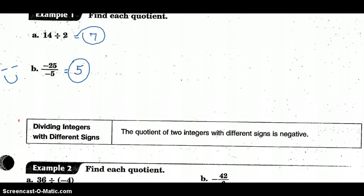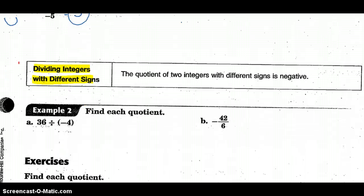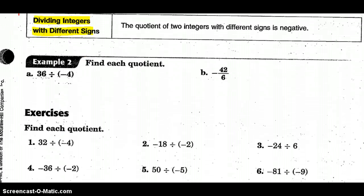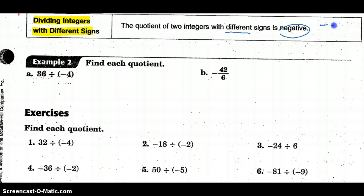The rule for dividing integers with different signs is also very similar to multiplication. If we have the quotient — division — of two integers with different signs, the outcome is going to be negative. That's that one-eye-each-way situation — negative/positive or positive/negative — our faces are not as happy.